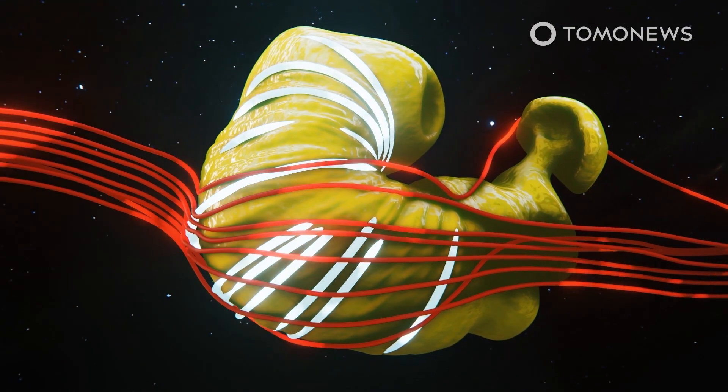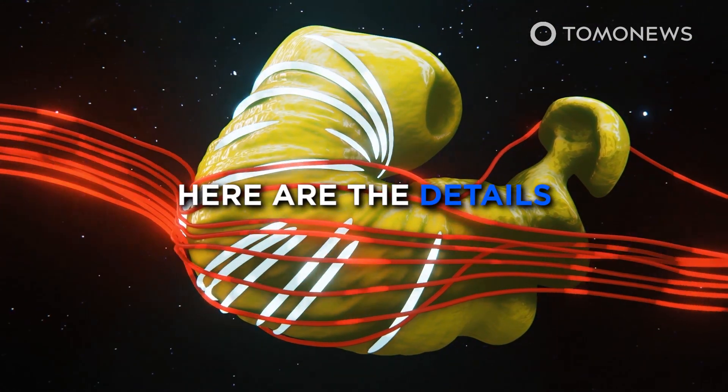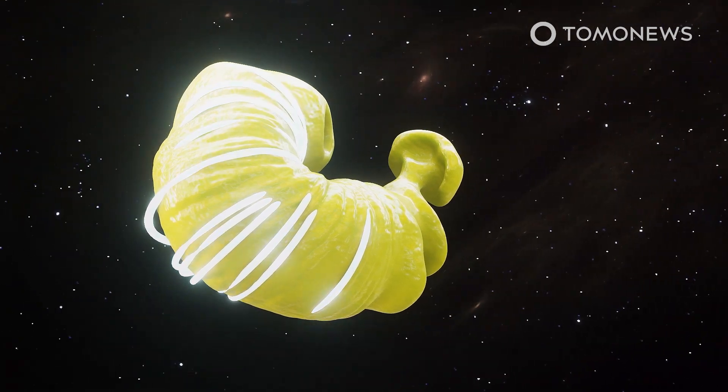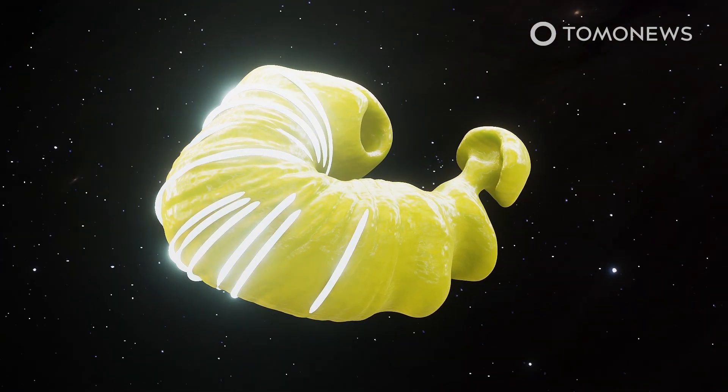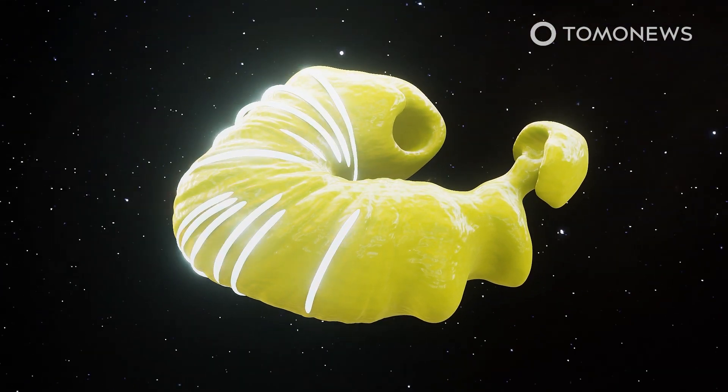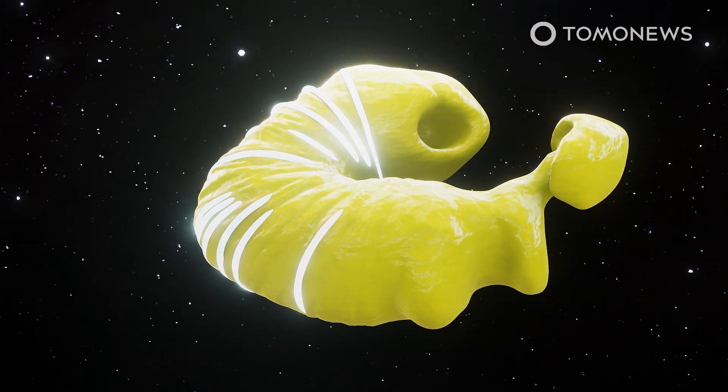Scientists think our solar system looks like a croissant. Here are the details. Last year, scientists at the DRIVE Science Center determined that the bubble around our solar system may be shaped like a giant croissant.